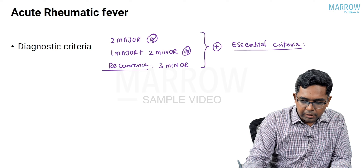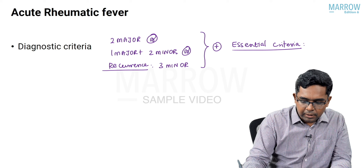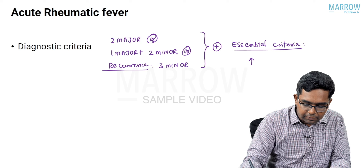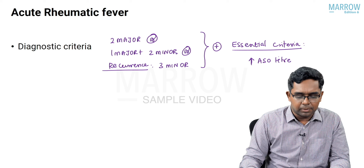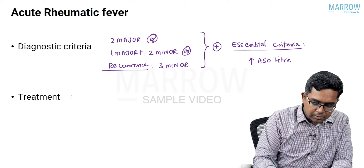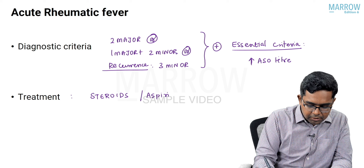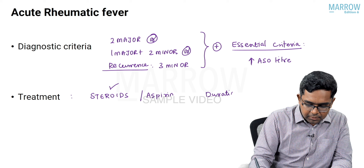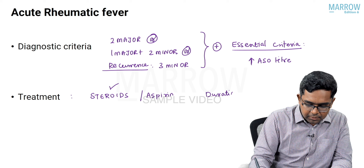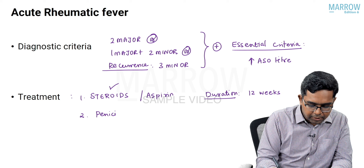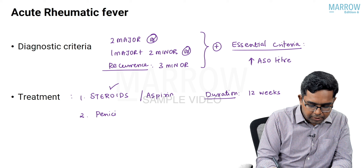The essential criteria is evidence of preceding streptococcal infection, by increase in ASO titer — anti-streptolysin O. Treatment involves steroids as the preferred anti-inflammatory agents, though aspirin can also be used; the usual duration of treatment is 12 weeks. Along with that, a 10-day course of penicillin is given to eradicate streptococci.